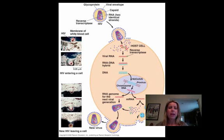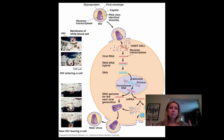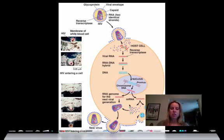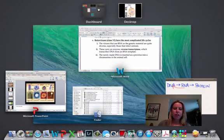HIV is the virus that actually causes AIDS, which is the syndrome. What happens is that lytic cycle occurs in the T-cells, which are a type of white blood cell. That's why patients go in for their T-cell counts, and if those counts get too low, something as simple as a common cold could kill them because they lack enough immunity. That's where 'human immunodeficiency' comes from.